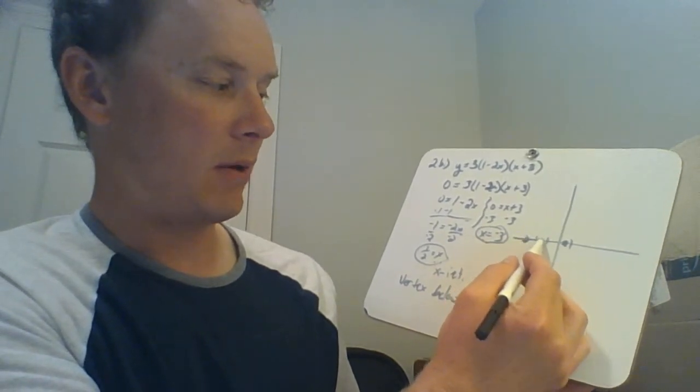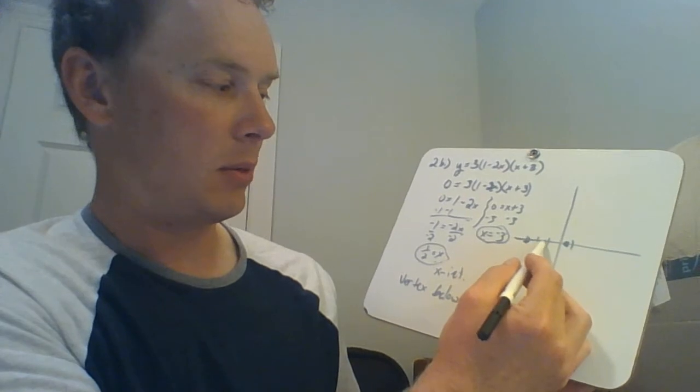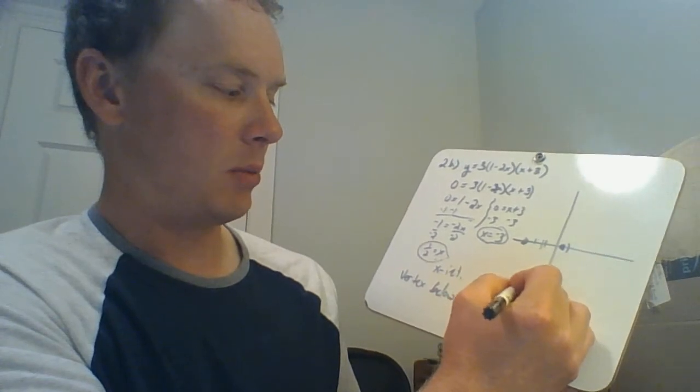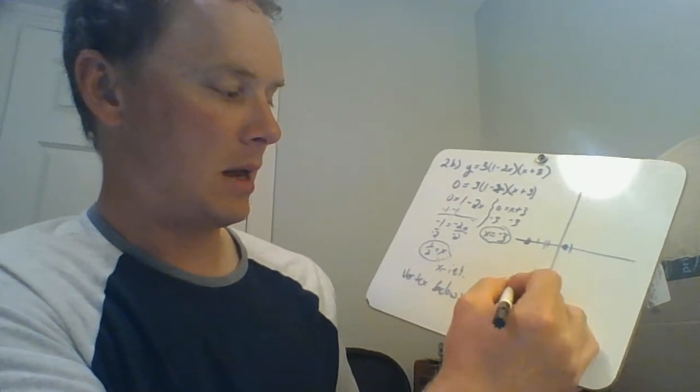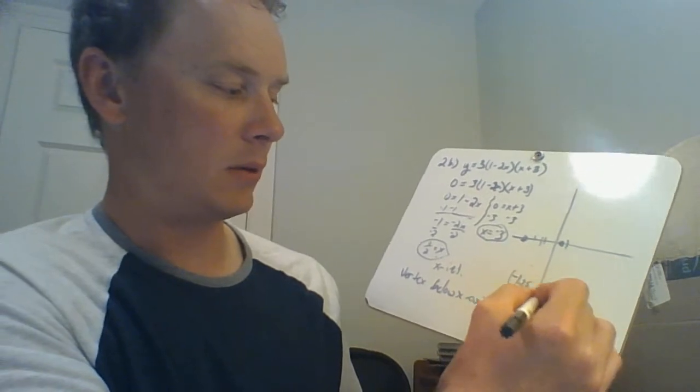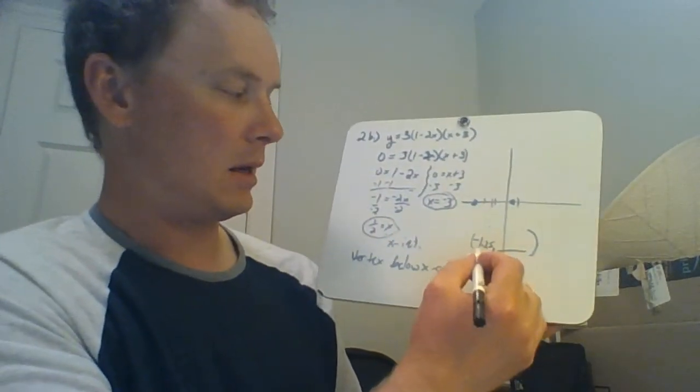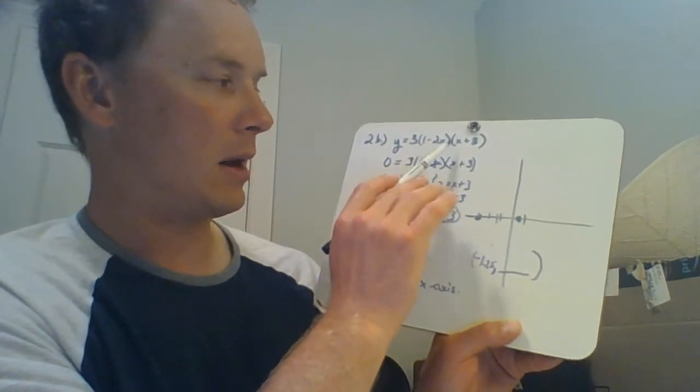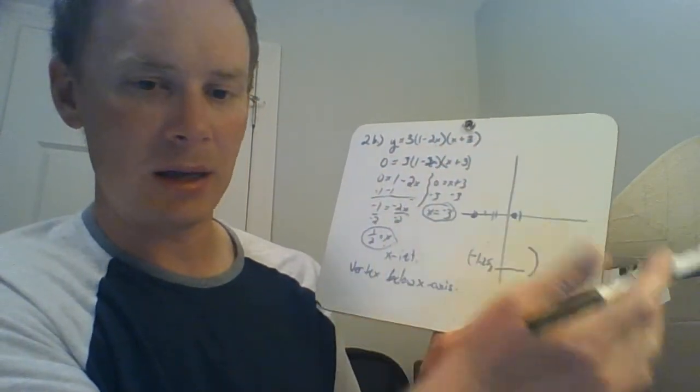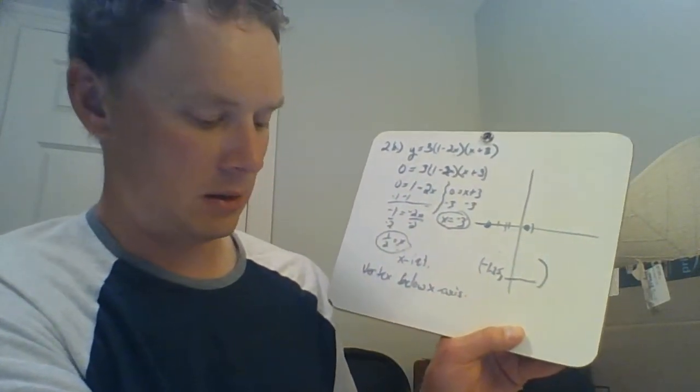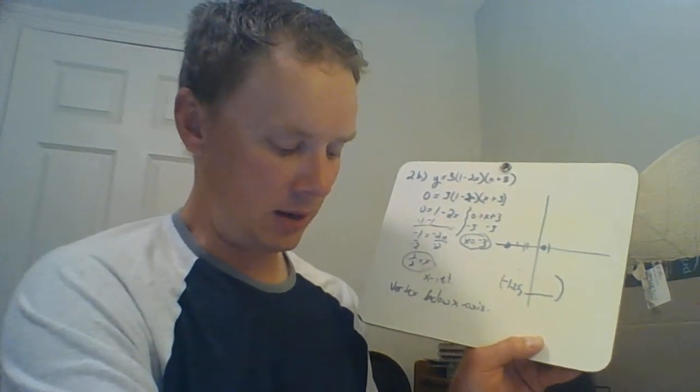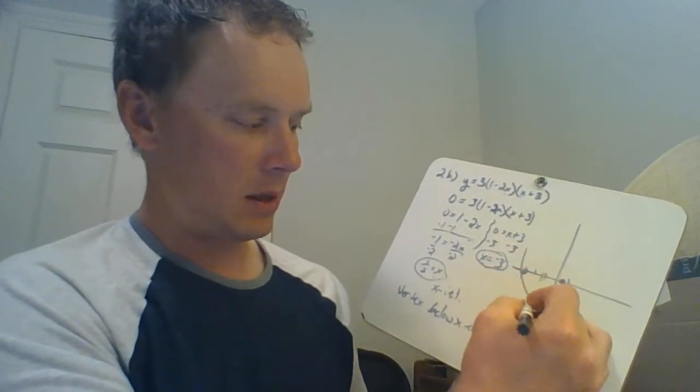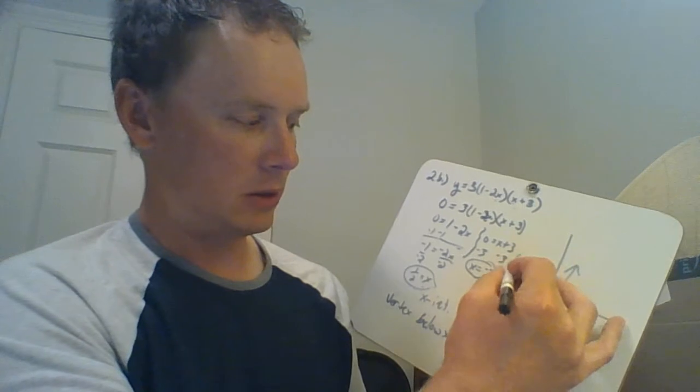So 1.75 units this way of negative 3 puts us at negative 1.25. So that negative 1.25 is the x value of our vertex. We can find the y value by taking negative 1.25 and plugging it into our function. By plugging that in for x here and x here and then evaluating that. That's how you would find your vertex, the y value of your vertex. So wherever that is, somewhere down here, that parabola would be opening up just like that.